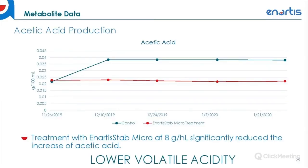Lastly from the metabolite data, we have acetic acid production over the trial duration. Acetic acid is produced in large quantities by spoilage malolactic bacteria. We can see that the treatment with Anardis Stab Micro at 8 grams per hectoliter significantly reduced the increase of acetic acid, while in the control without Stab Micro, acetic acid concentration nearly doubled.